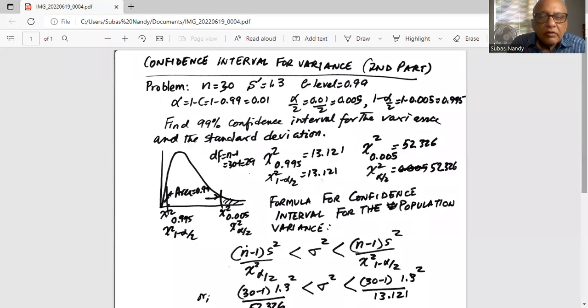So C level being 0.9, level of significance alpha is 1 minus C, which is 1 minus 0.99, which is 0.01. We divide it into two equal parts. Alpha by 2 is 0.01 divided by 2, 0.005 in the left tail and 0.005 area in the right tail.